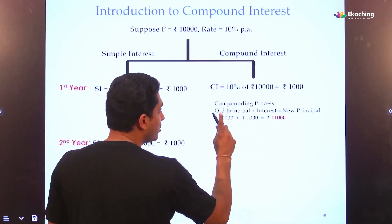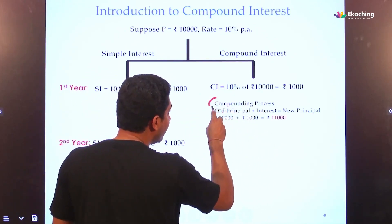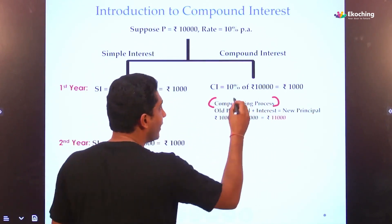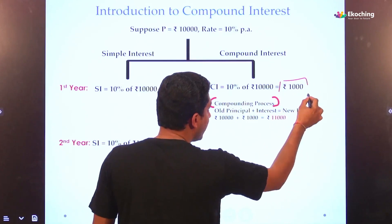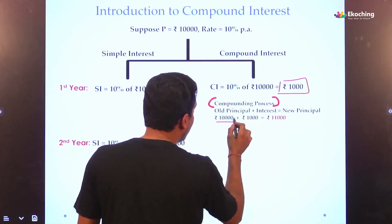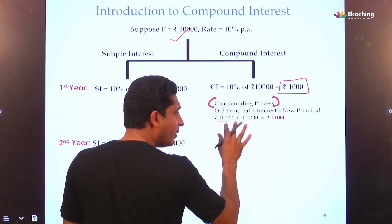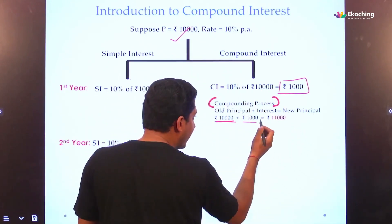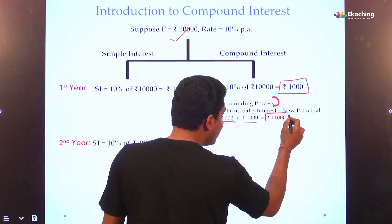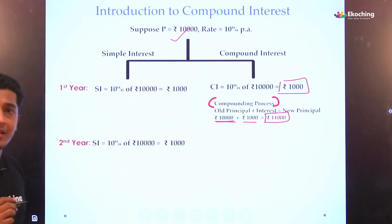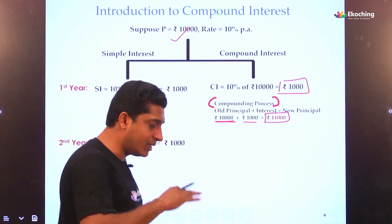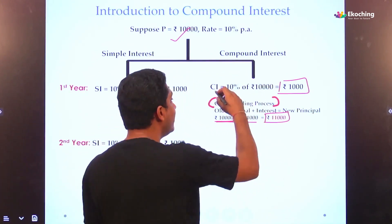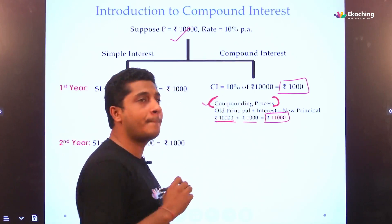This compounding process means: our interest that came — we add it to our current principle. Currently we started with 10,000, so 10,000 plus 1,000 gives a new principle of 11,000 rupees. What did I do? I added interest to the principle. That process is called the compounding process.